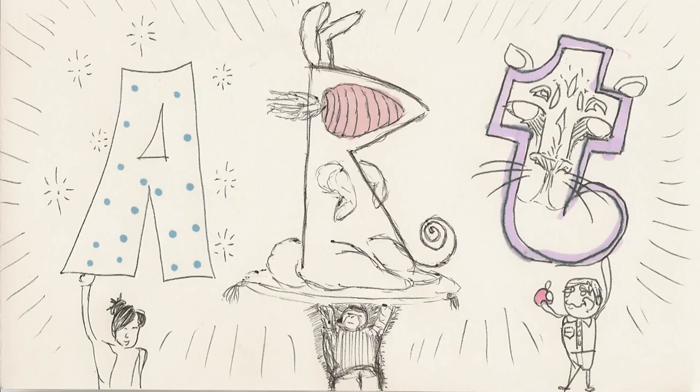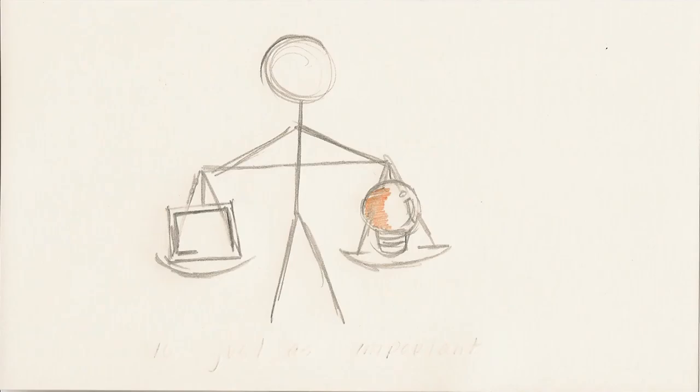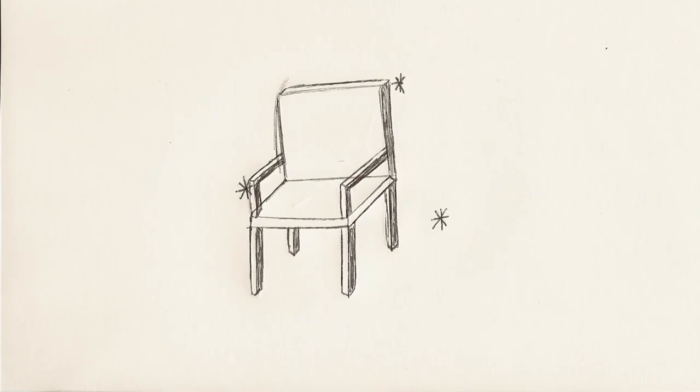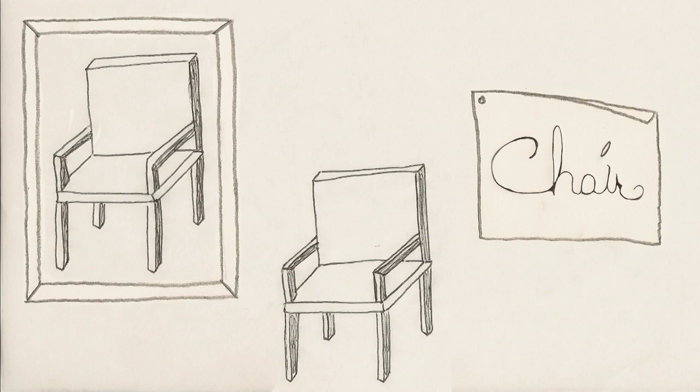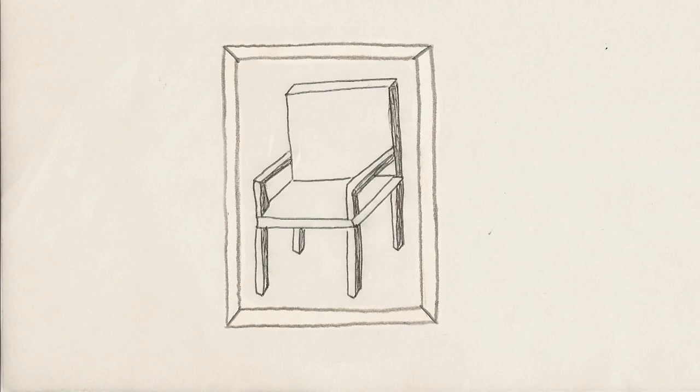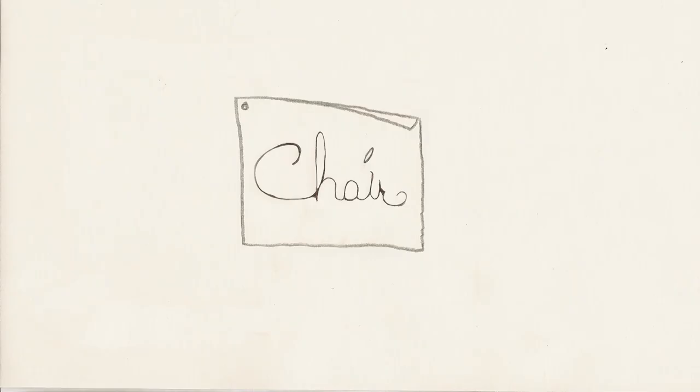In conceptual art, the idea is just as important, if not more so, than the final product. This is perfectly illustrated by the artwork One and Three Chairs by Joseph Kosuth, which is composed of an actual chair, a scale photograph of a chair, and the printed word chair.